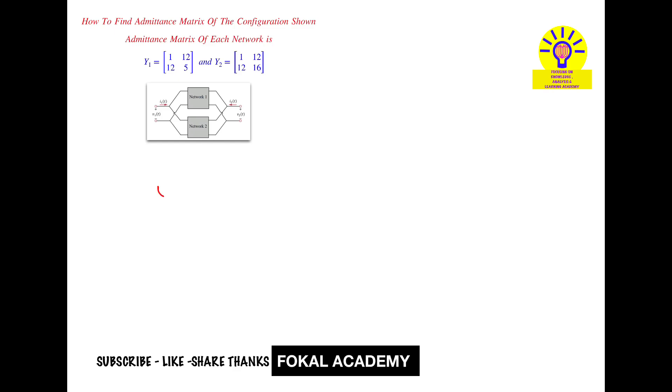So the overall admittance matrix is y, the sum of admittance matrices of each network is y1 plus y2. So admittance matrix of this is y1 and for this y2. So both are in parallel, the overall admittance is equal to y1 plus y2.